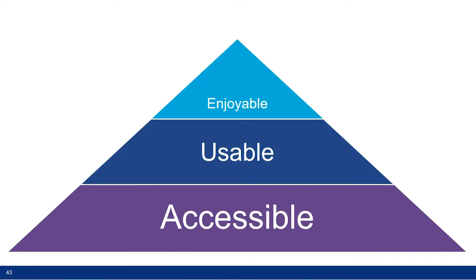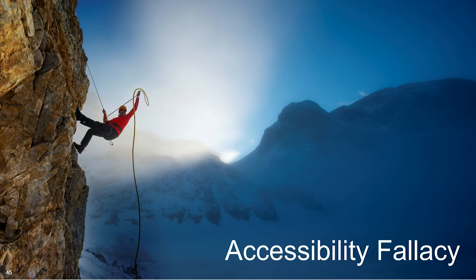You can think of this as a kind of hierarchy. You need accessibility — that's your base. But then you can make it usable, and then you can make it enjoyable. Because I only have five minutes, I won't be talking about enjoyable. But I will be talking about the accessibility fallacy — the fallacy that just because you've made it accessible and people are using it, that it is usable for those people that need it.